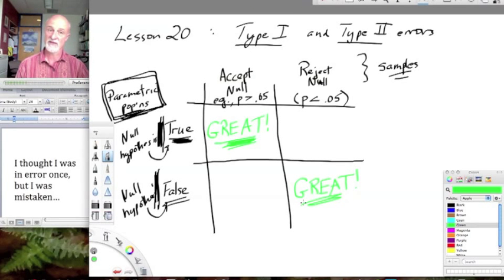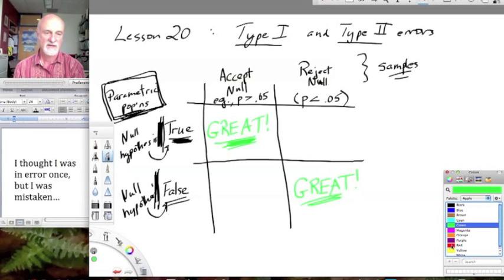This is the truth. Our statistical test with these samples has given us a result which is, in fact, corresponding with the truth about the parametric populations from which we are sampling.